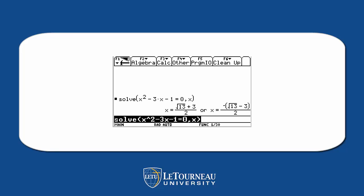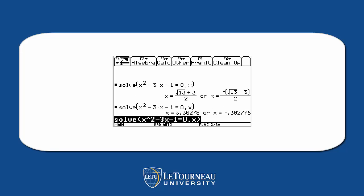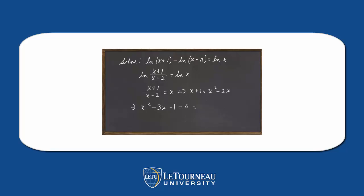And notice what we get — it definitely doesn't factor. Let's do diamond-enter to get decimal form. So x is approximately 3.3 and x is approximately minus 0.3. Let's note the significance of that.